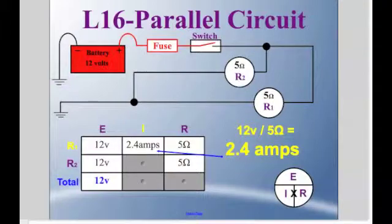Now since resistor 2 has 12 volts applied to it, and it also has 5 ohms of resistance, we can move 2.4 amps over into that column as well.